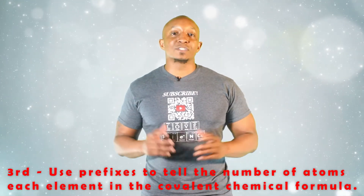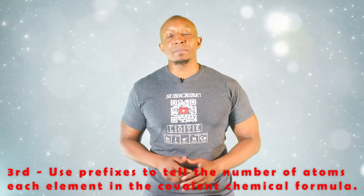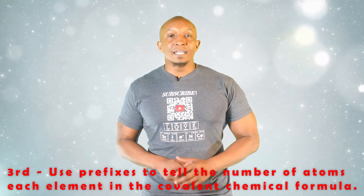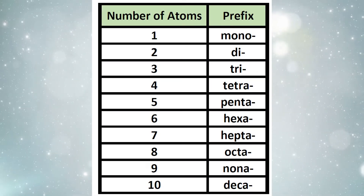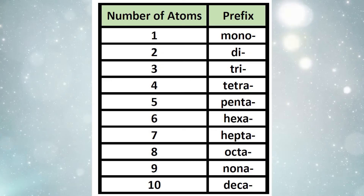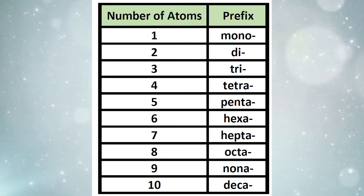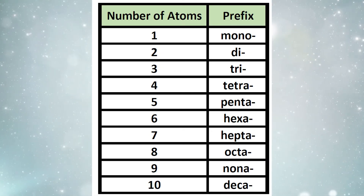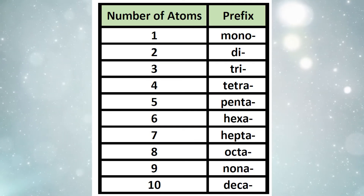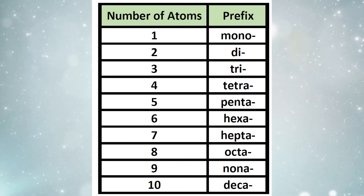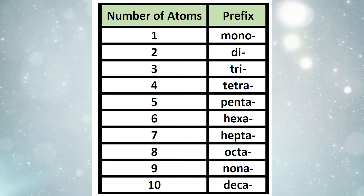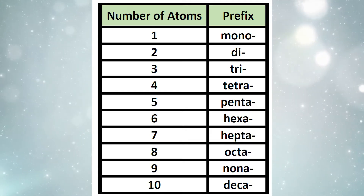We're almost done with naming the chemical formula. Third, we will now use the prefixes to tell the number of atoms of each element in the covalent chemical formula. Let's do a quick review of our prefixes: Mono stands for 1, Di for 2, Tri for 3, Tetra for 4, Penta for 5, Hexa for 6, Hepta for 7, Octa for 8, Nano for 9, and Deca for 10.